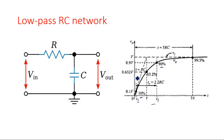The capacitor charges or discharges. If you had a resistor instead of the capacitor, it would act as an attenuator but not as a filter. Whenever a capacitor is present, this type of charging and discharging behavior is encountered. Since we are taking the output across the capacitor in the low pass RC network, the changes made by the capacitor appear at the output.